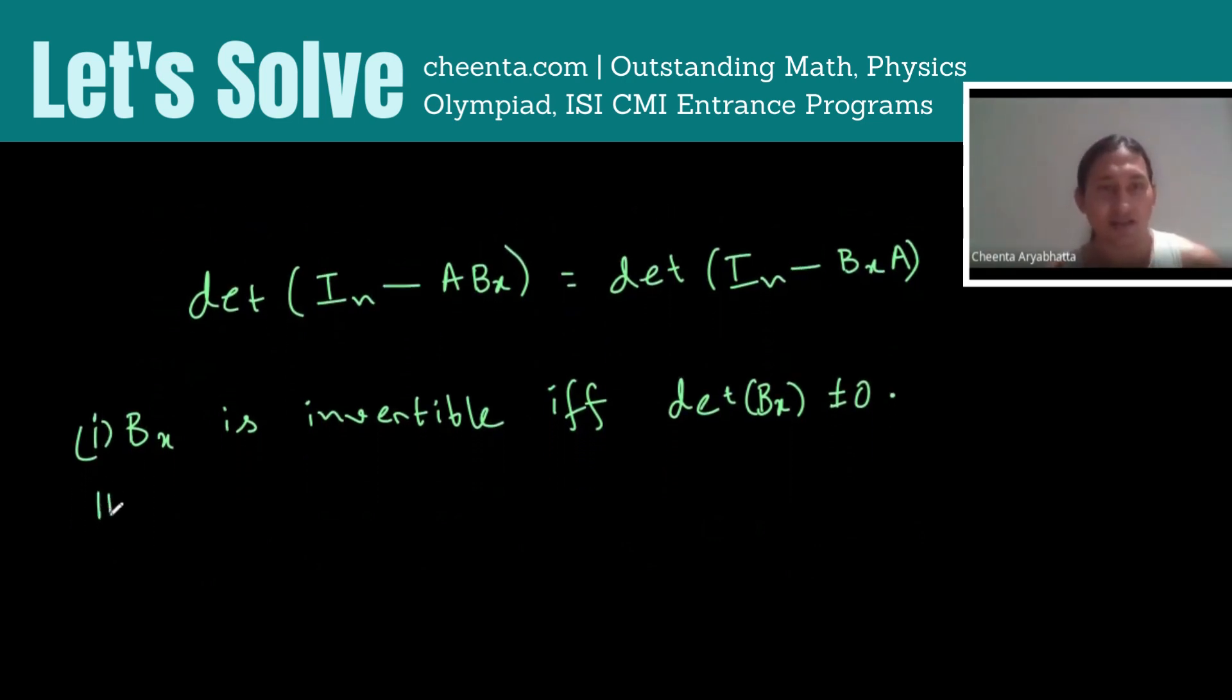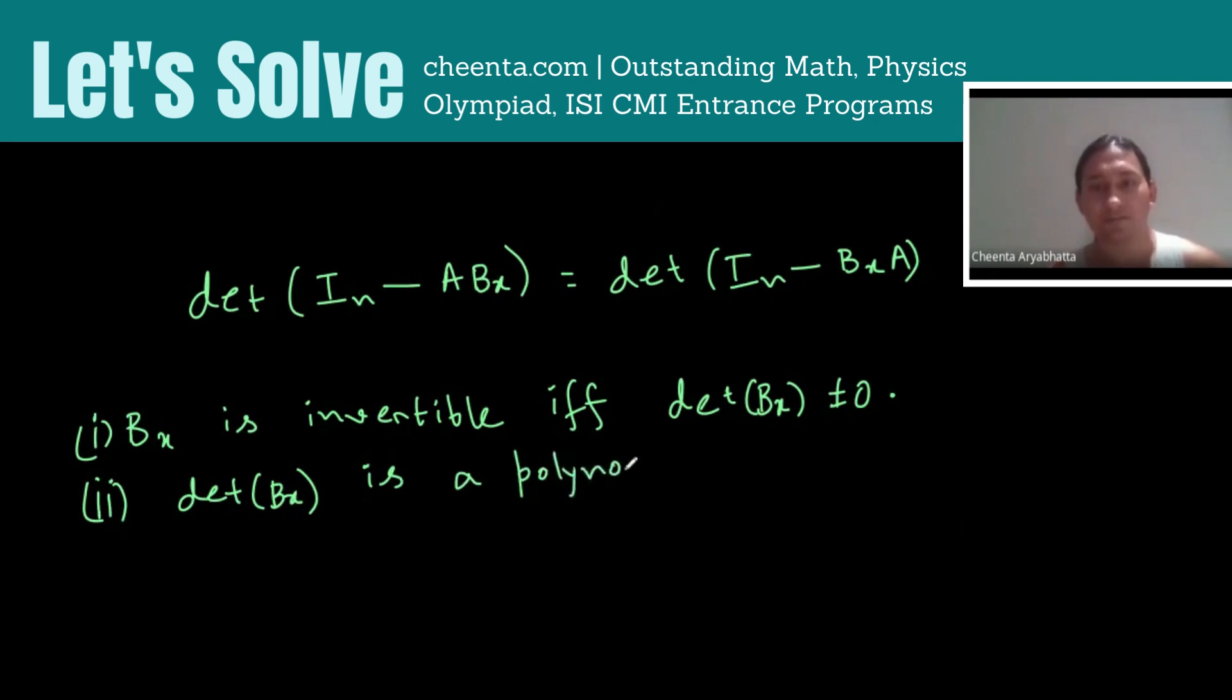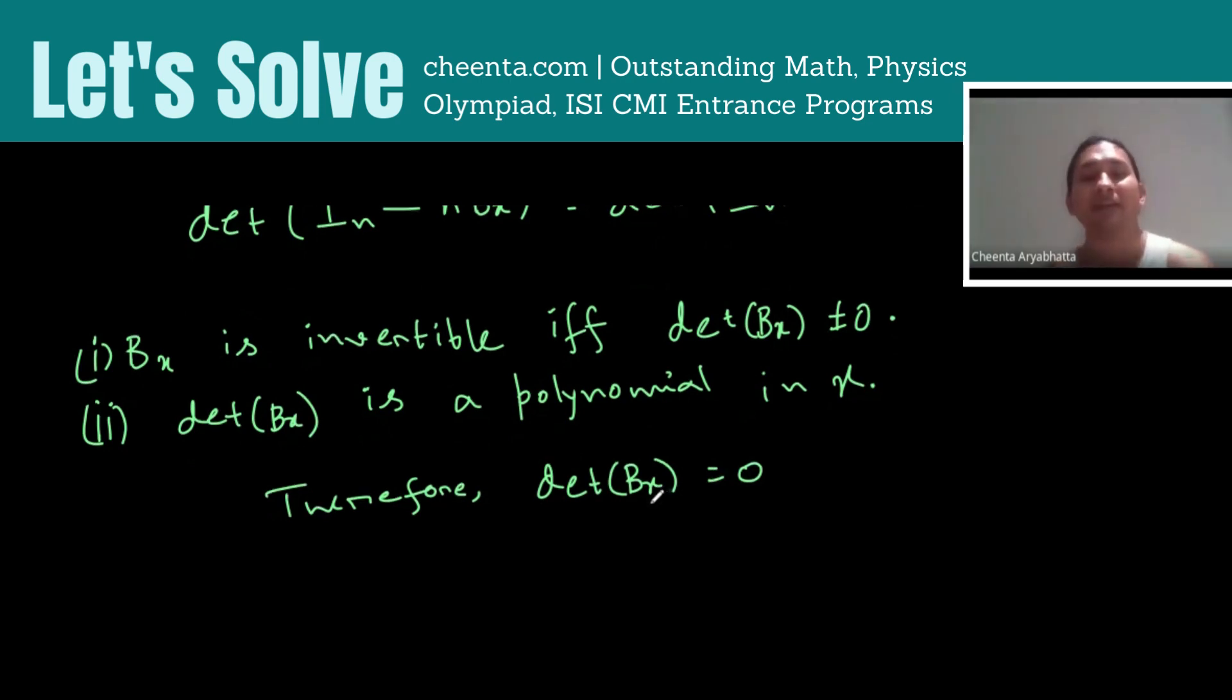Now, we have another observation which is observation number two. Determinant of BX is a polynomial in X. Therefore, from polynomial theory determinant of BX equal to zero can have only finitely many solutions because a polynomial has only finitely many roots.